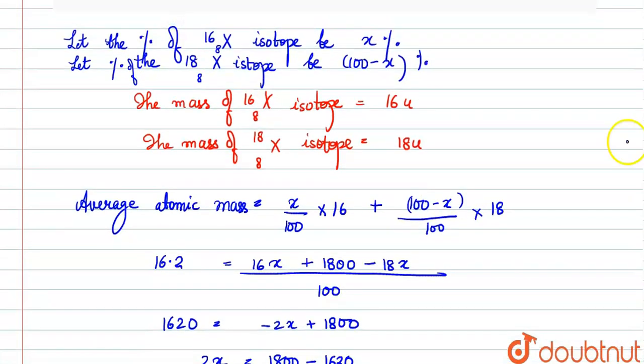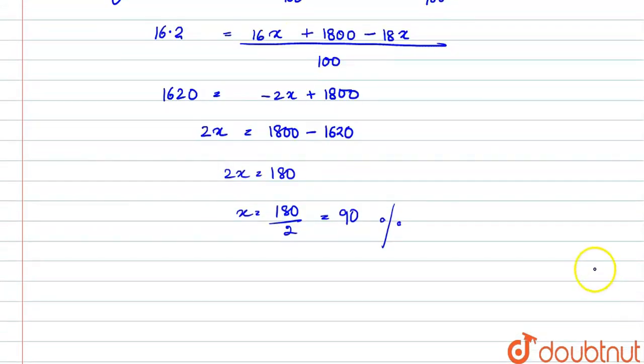The percentage of 16X isotope. So our percentage of 16X isotope comes out to be 90%. So what was the other? We'll subtract 90 from 100, so what will it be? Percentage of 18X isotope is 10%. Clear?